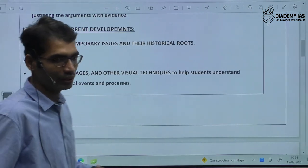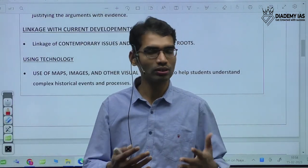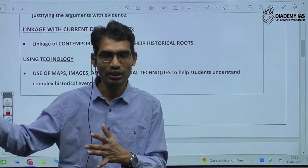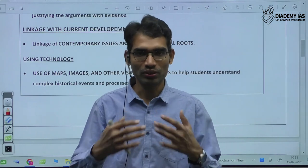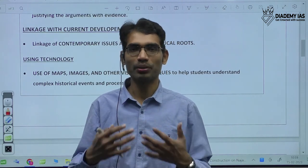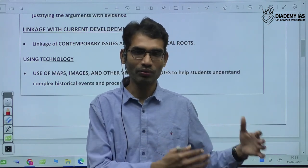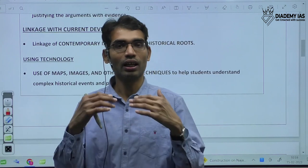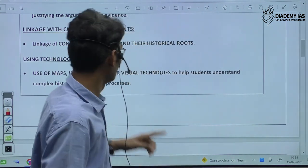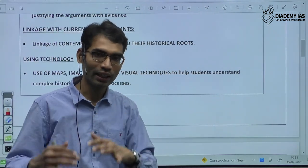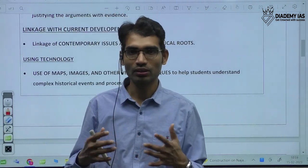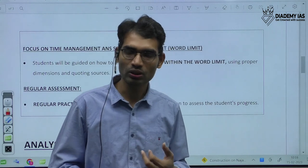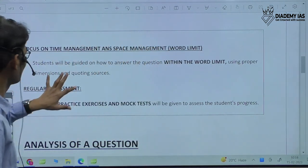I will try to explain how to link history with current developments. History is about the story that already happened — the purpose of reading it now is to learn lessons so we do not repeat the same mistakes in the future. We are preparing for administrative service, meaning we have to contribute to the progress of the country. If we have a better understanding of history and can utilize that knowledge, we will not repeat mistakes and will use our knowledge for the development of India. We have to connect historical aspects with the present context and current affairs, using different images, maps, and Excel sheets.